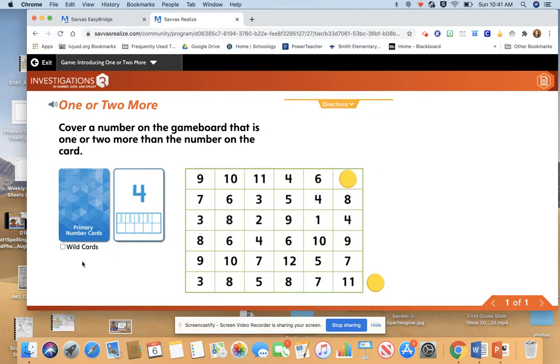Okay, now you're going to draw another card. This time I have the number seven. I can add one or two more to seven. Let's add one more. One, two, three, four, five, six, seven. And one more would be eight. So I can cover any eight on my board. One, two, three, four, five, six, seven, eight, nine. So I can cover any nine on my board.